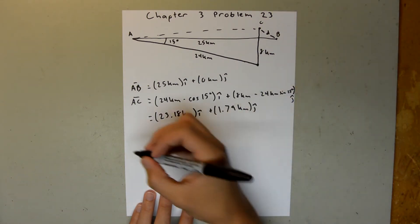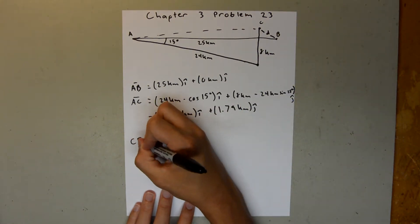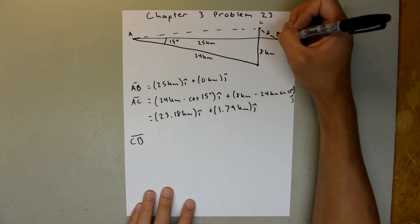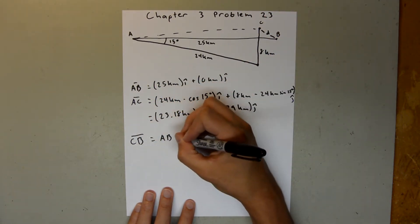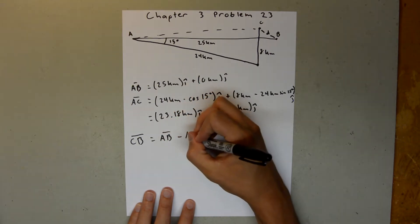And so now we need to find this vector right here, and we can do that with subtraction, so vector CB, so C to B, is going to be equal to AB minus AC.